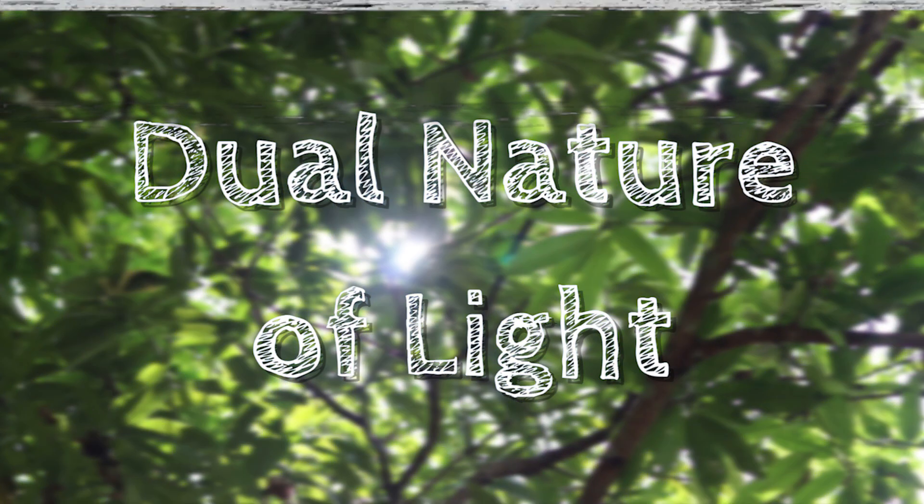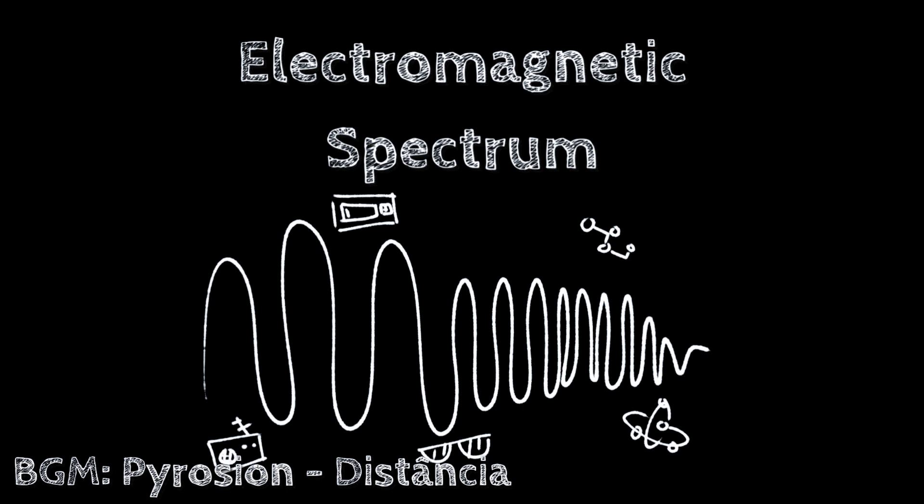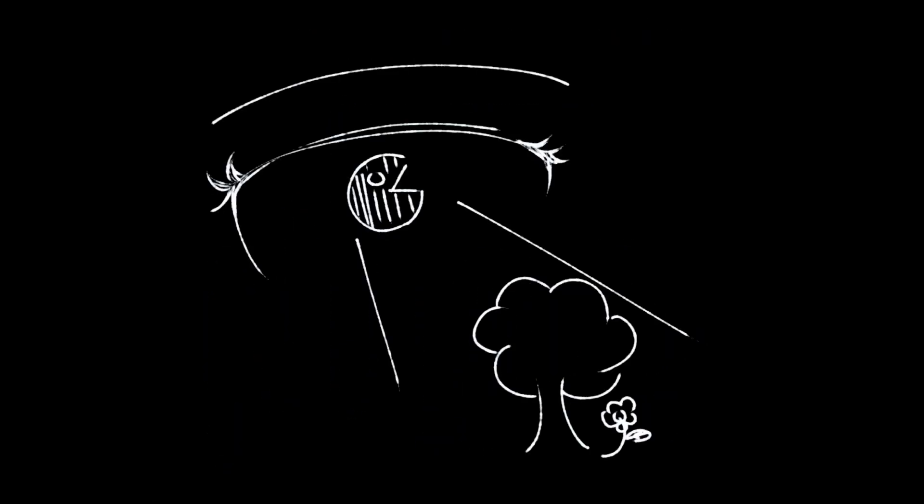But first, what is light? Well, light is part of the electromagnetic spectrum that can be detected by our eyes allowing us to see our surroundings. And its nature, whether a wave or a particle, has been out for debate for a long period of time.